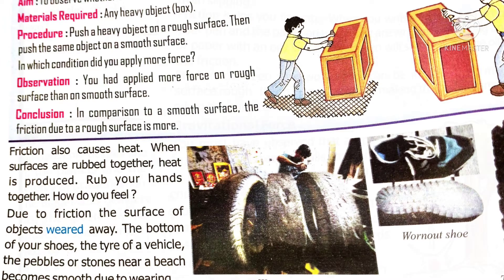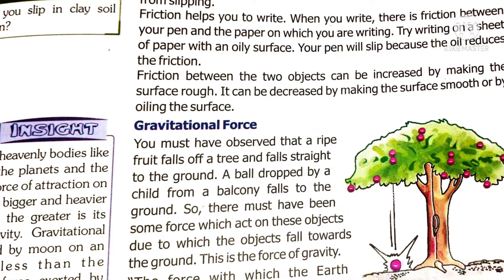Next comes gravitational force. What is gravitational force? It exists between two bodies. All fruits from trees fall down because of the gravitational force of the earth. The force with which the earth attracts all objects towards itself is called gravitational force or force of gravity. When you throw a ball upwards, its speed decreases because of the pull of the earth towards its center.